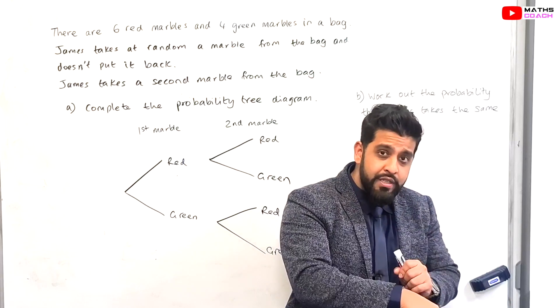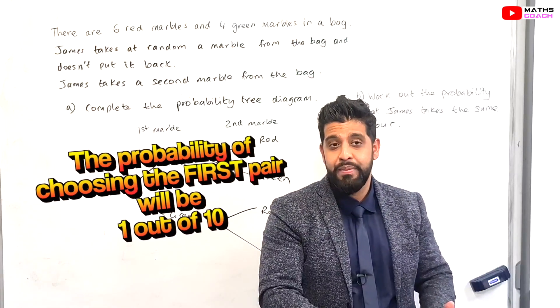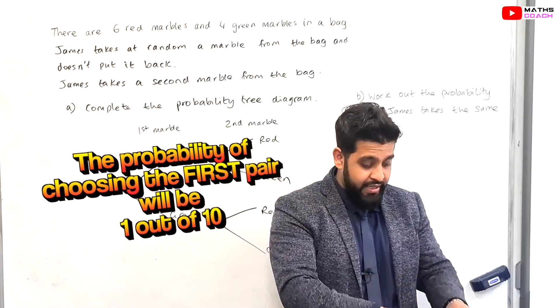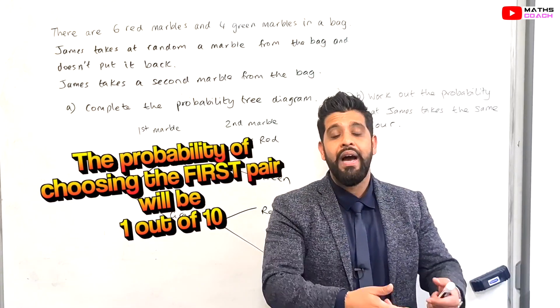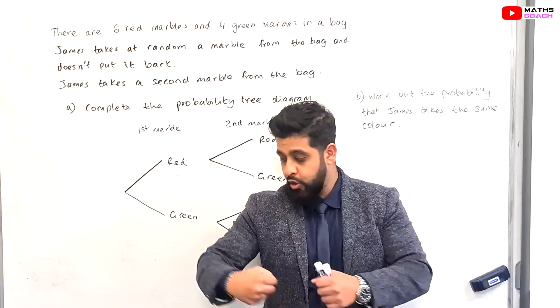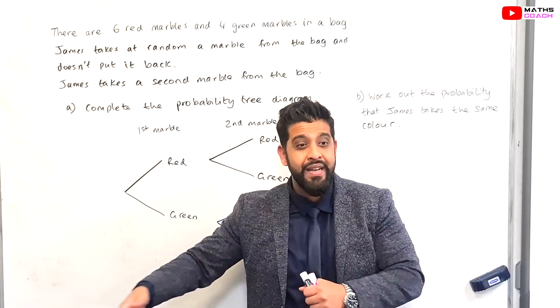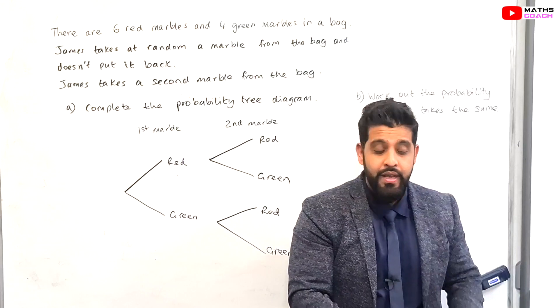When you go for the first time, the probability of you selecting a particular sock is 1 out of 10. So you've got that — you put it aside, you put it in your bag. But you need a second backup pair.